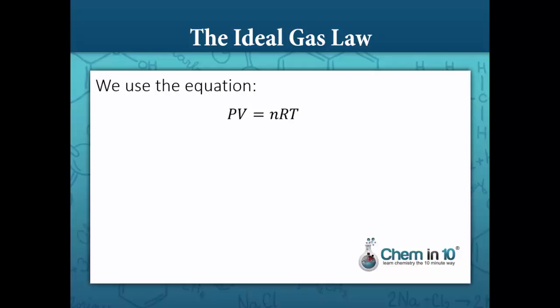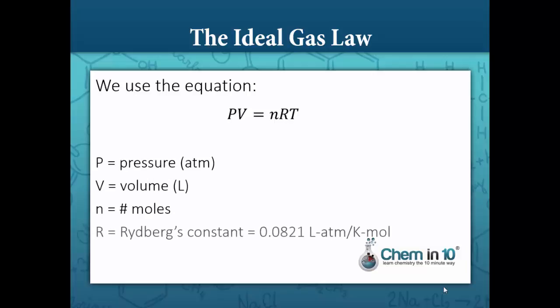The ideal gas law is PV equals nRT, where P is pressure in atmospheres, V is volume in liters, n is number of moles, R is a constant — it's called Rydberg's constant, 0.0821 liters atmosphere per mol — and T is temperature in Kelvin.